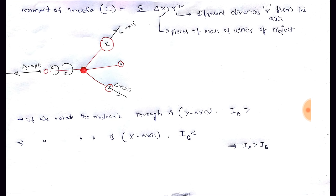Now, what is moment of inertia? It is the summation of Δm·r², where m indicates the mass of atoms of the object being considered, and r represents the different distances from the axis. Just look at the molecule here — I have given the x-axis, y-axis, and z-axis.